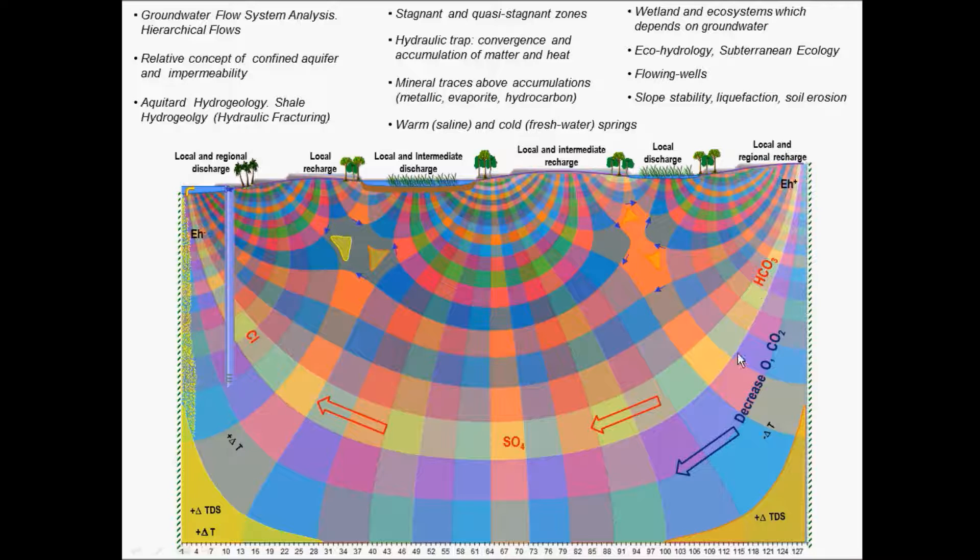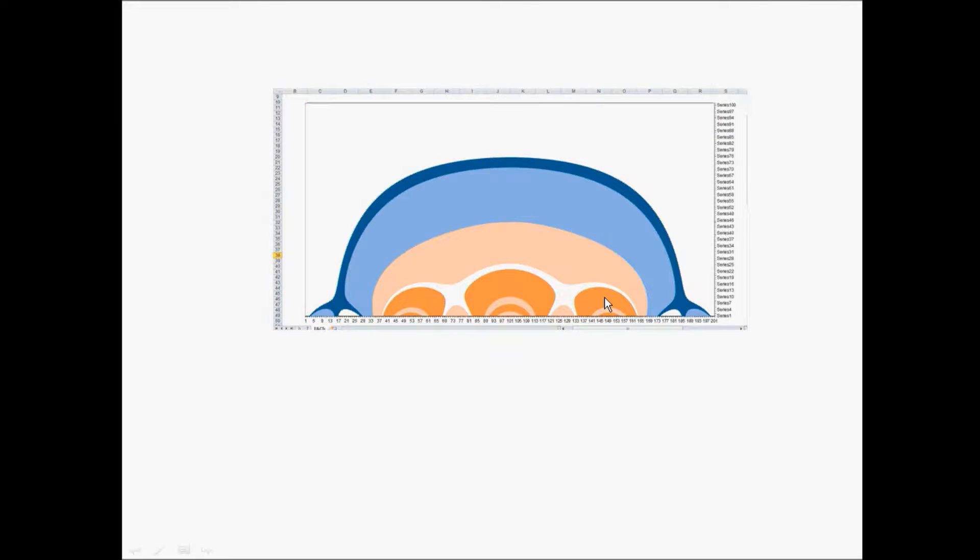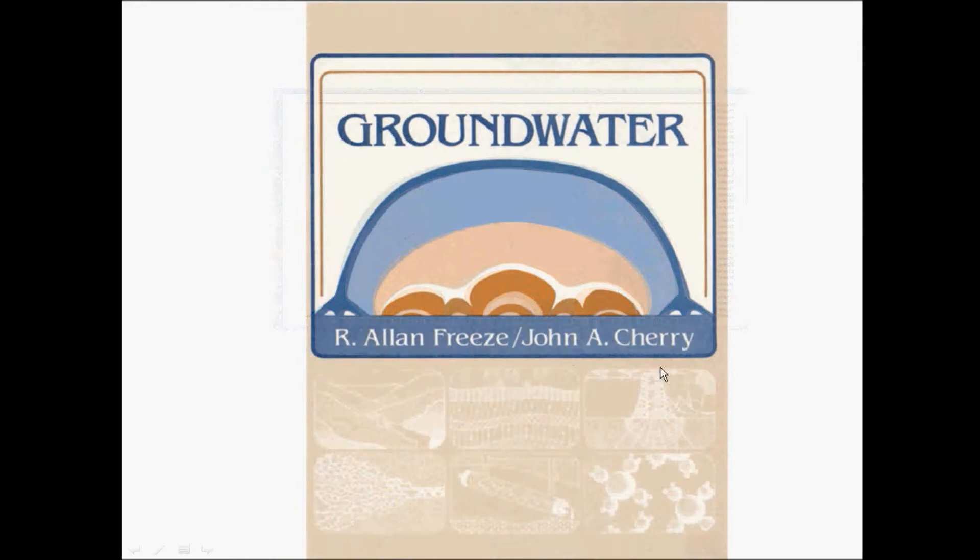To finish this part, let's bring again the original Tóth figure. With the appropriate range in the spreadsheet and with the color, you can find the same figure. If you invert these, you get this figure, and this was used by Alan Freeze and John Cherry for their groundwater book cover. Thank you very much.